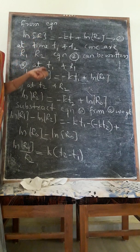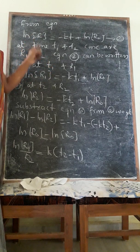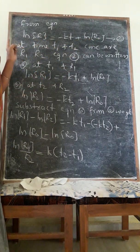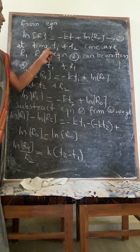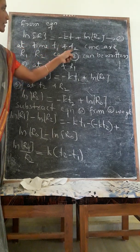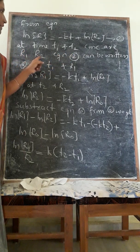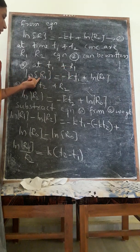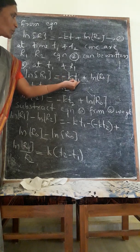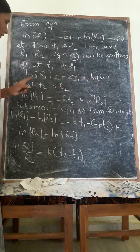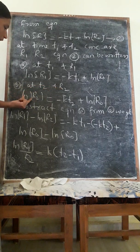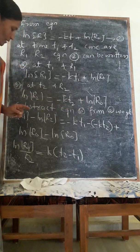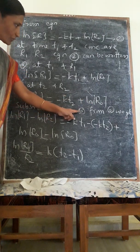I will use a few other different forms of equations from this equation. Equation 2 can be represented in two different ways at time T1 and T2, concentrations are R1 and R2. At T1 and R1, the equation 2 becomes ln R1 equals minus kT1 plus ln R0. At time T2 and R2, ln R2 equals minus k into T2 plus ln R0.